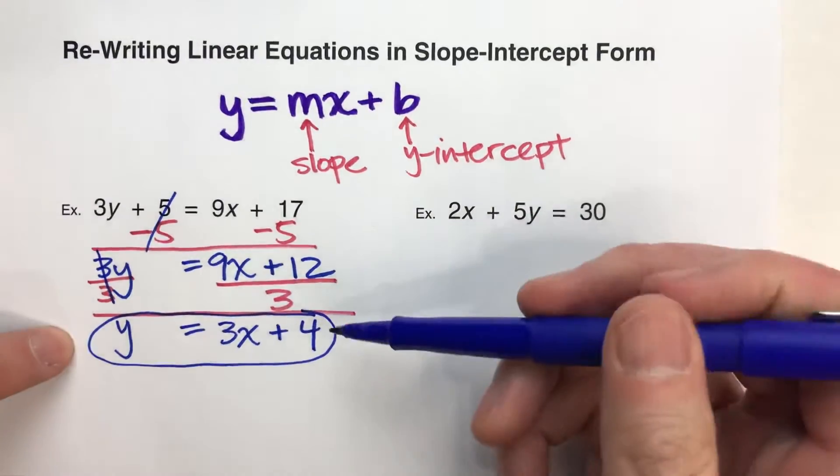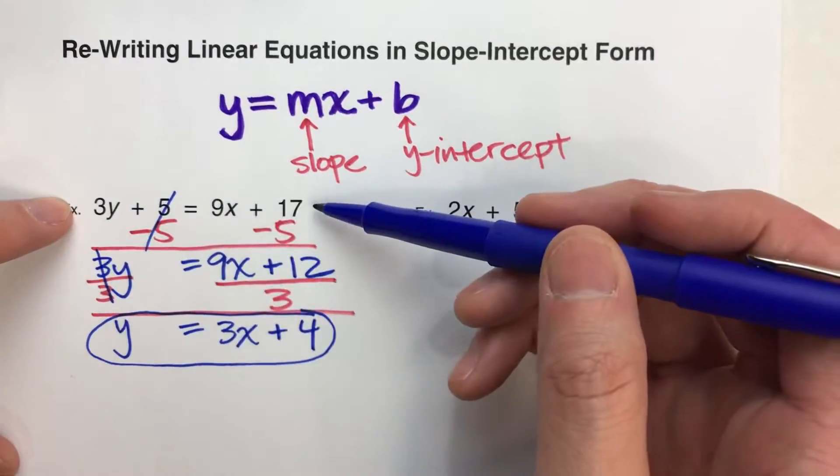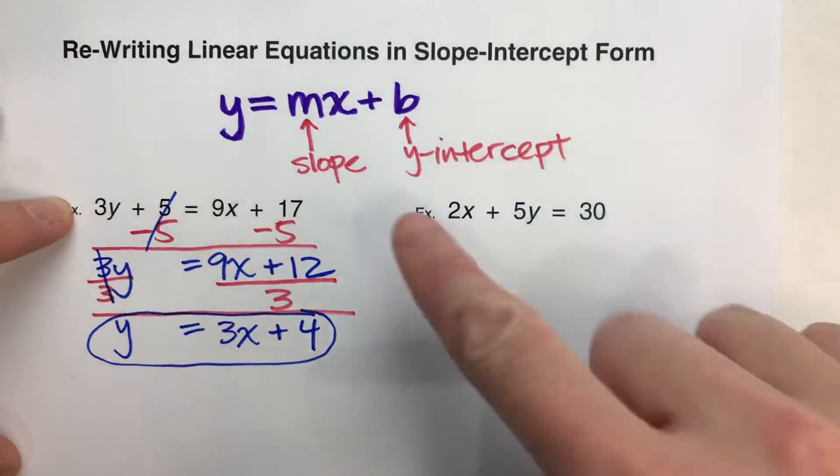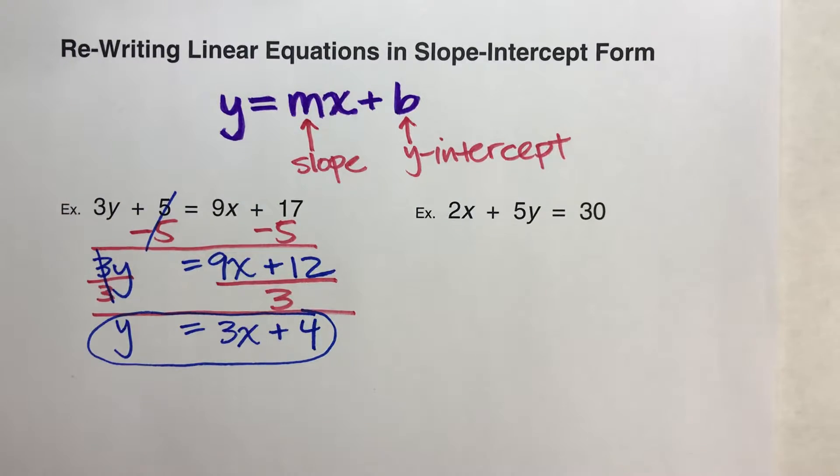And look what we have here. Y equals 3x plus 4. This is in slope-intercept form. So that original equation, if I wanted to graph it, I know it would have a y-intercept of 4 and a slope of 3, and I could easily graph that.